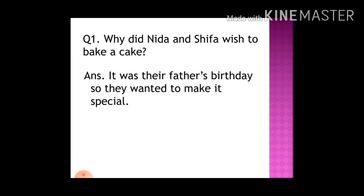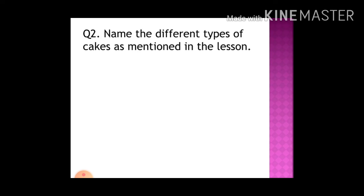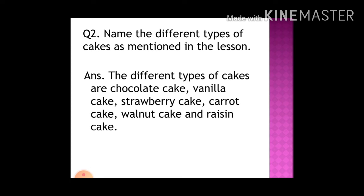Question two: name the different types of cakes mentioned in the lesson. The different types of cakes are chocolate cake, vanilla cake, strawberry cake, carrot cake, walnut cake, and raisin cake. These cakes were mentioned in the lesson, and if you have read the chapter thoroughly, you must know their names.